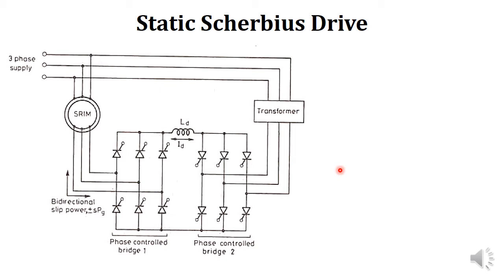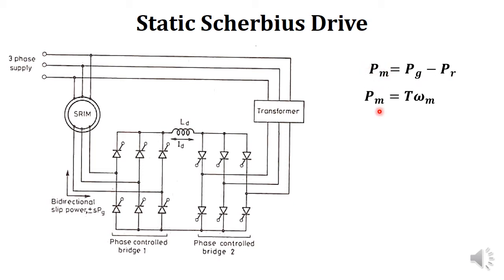Let's consider the basic equations for slip power recovery schemes. The first equation is: Pm = Pg − Pr, where Pm is the mechanical power, Pg is the air gap power, and Pr is the slip power. Using slip power recovery schemes, we control the amount of Pr. If we are able to control Pr, then Pm can be controlled, and if Pm is controlled, speed is controlled.